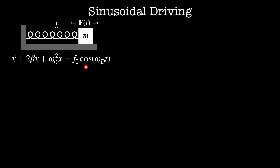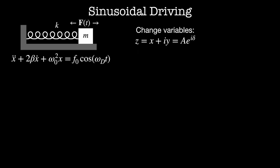Let's imagine I have a special type of driving force: sinusoidal driving. That means my driving force is proportional to cosine omega_d t, where omega_d is the driving frequency. The equation of motion is then x double dot plus 2 beta x dot plus omega naught squared x equals f naught times cosine omega_d t. Instead of looking at just the real part, we'll consider the whole complex exponential, using the change of variables z equals x plus iy. This is helpful because I can take advantage of the geometry of the complex plane.